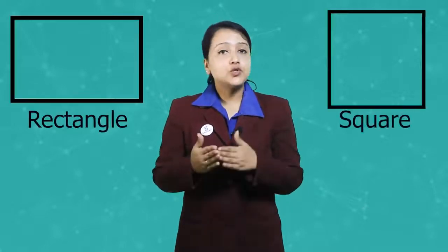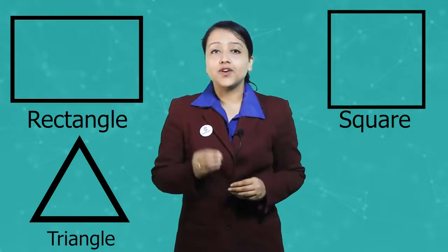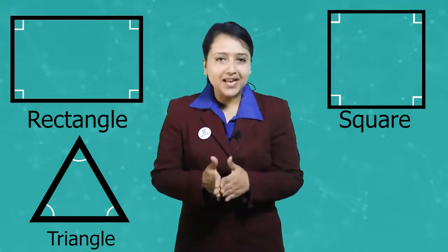Here are some common shapes that we see in our daily lives. These are everyday things — what's so special about them? Well, they are the shapes we recognize as rectangle, square, triangle, and others, because of the lengths of their edges and the angles at which the edges meet.